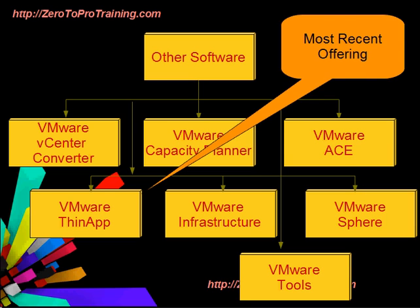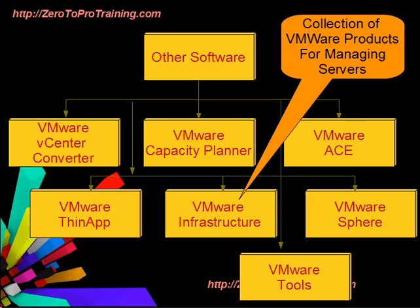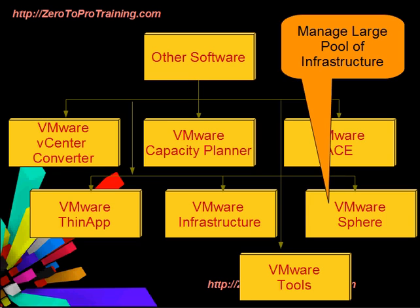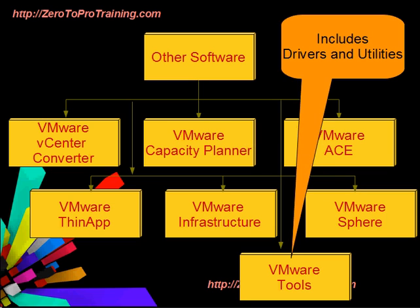VMware Infrastructure is a collection of VMware products used to manage VMware ESX and ESXi server environments. VMware vSphere is a cloud operating system. VMware vSphere 4 was originally named VMware Virtual Infrastructure 4. It is capable of managing large pools of infrastructure software and hardware, both from internal and external networks.